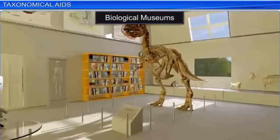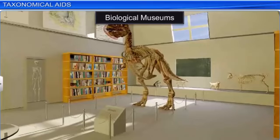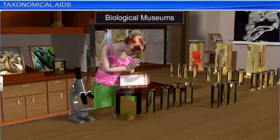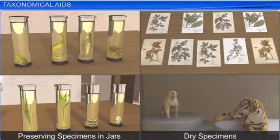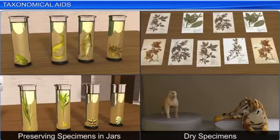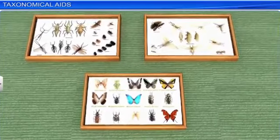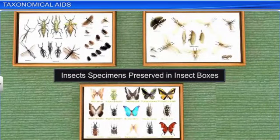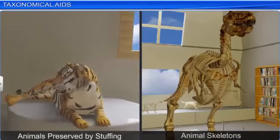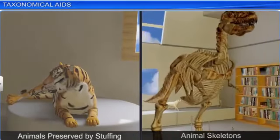Biological museums, set up in educational institutions, also act as taxonomical aids. These museums have collections of preserved plants and animals, which are used for study and reference. They are preserved in jars using preservative solutions or as dry specimens. Insects are collected, killed, pinned, and then preserved in insect boxes. Larger animals are typically stuffed and preserved, or their skeletons are displayed.